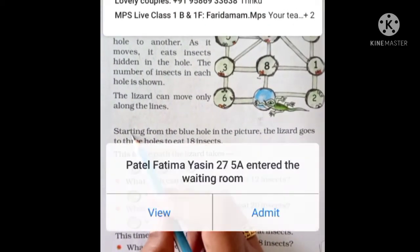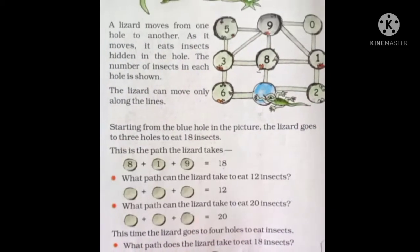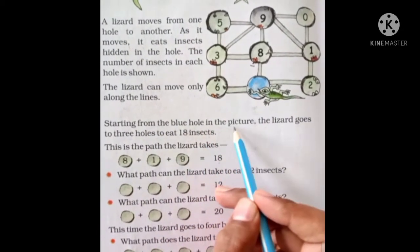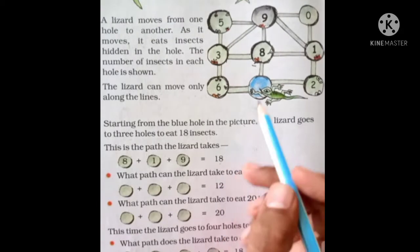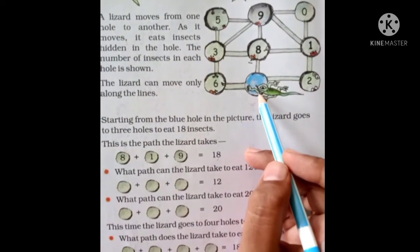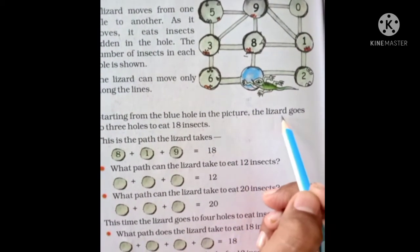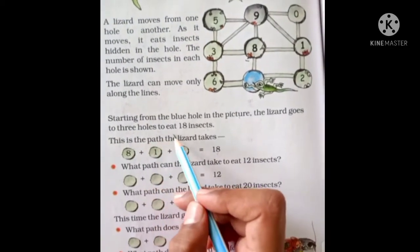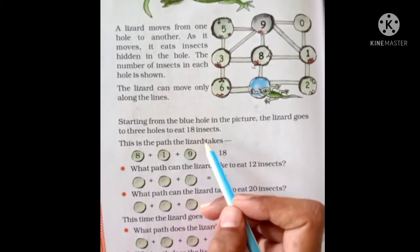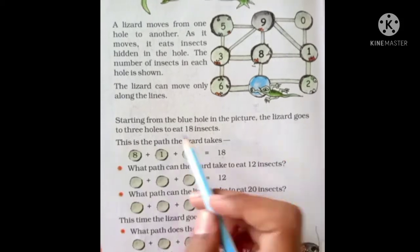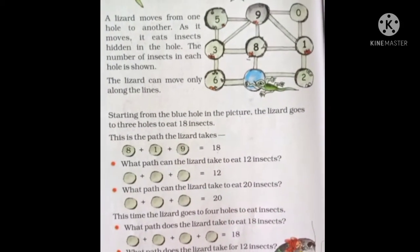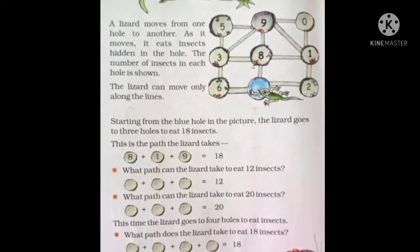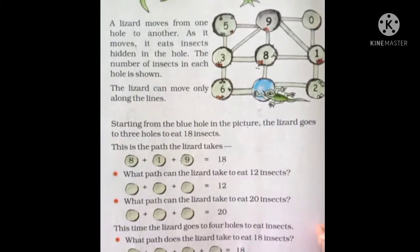S-T-A-R-T-I-N-G, starting from the blue hole in the picture. Where does it start? The blue hole. Can you see the blue hole? The lizard goes to 3 holes to eat 18 insects.